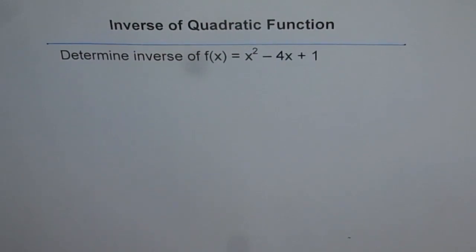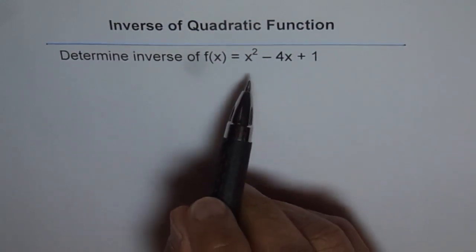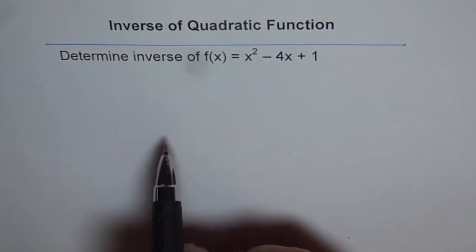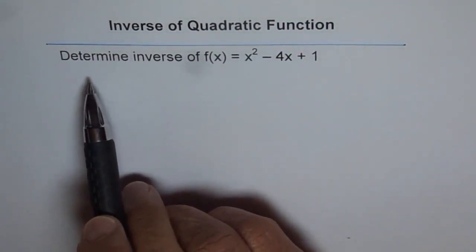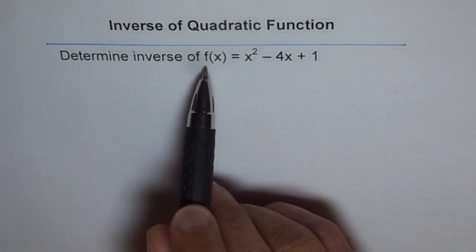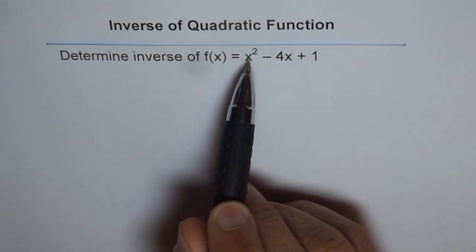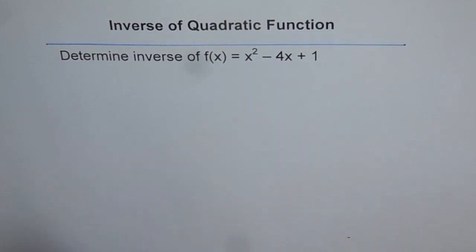Inverse of quadratic function. Sometimes it is very difficult to find the inverse of a quadratic function given in standard form. So we have a similar case here. I have taken purposely a very simple one. So here we have an example which says determine inverse of f(x) equals x² - 4x + 1.